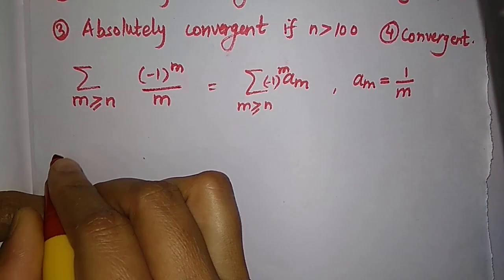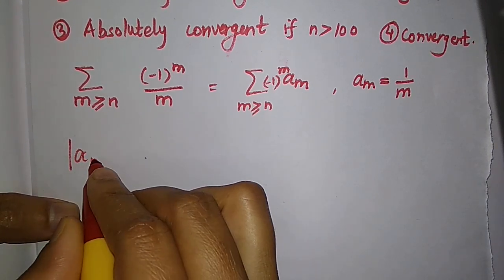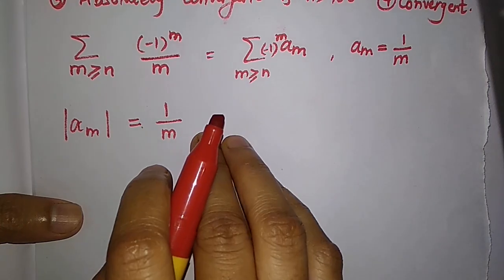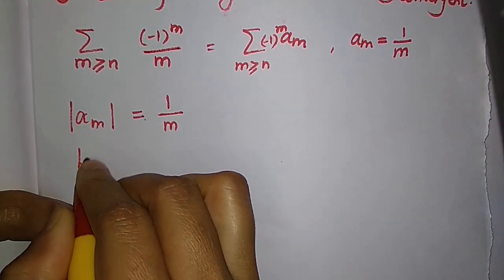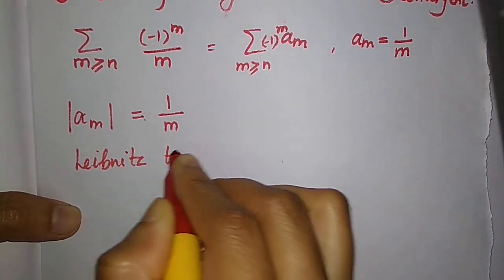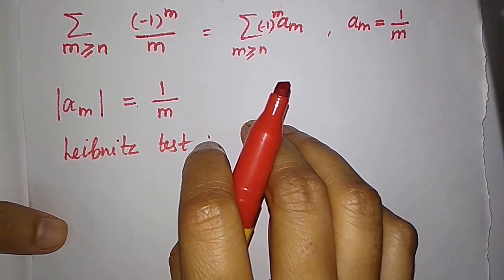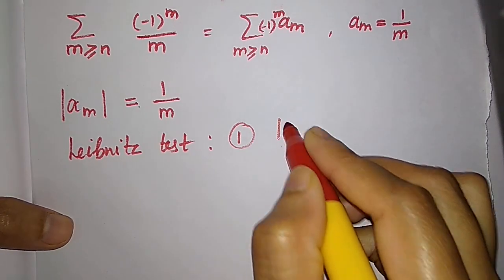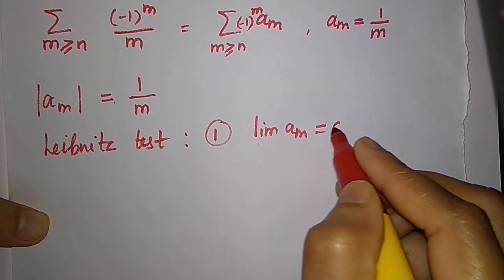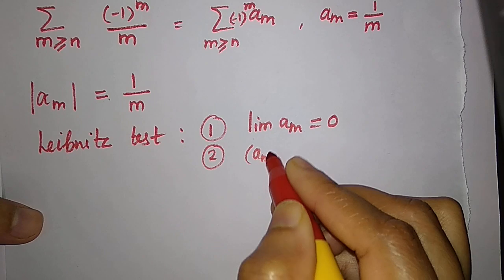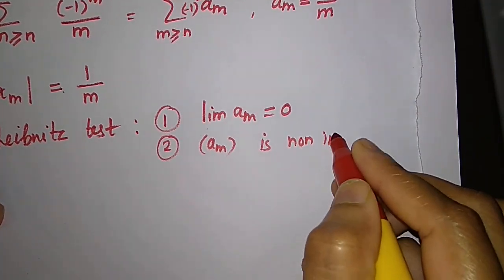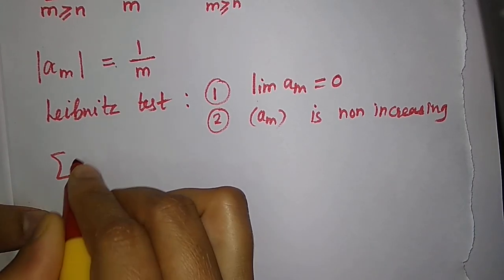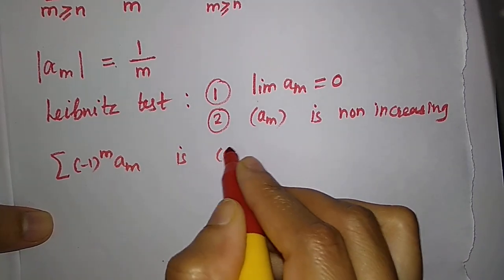Here, |a_m| = 1/m. To check the convergence of an alternating series, we use the Leibniz test. The conditions are: first, the limit of a_m must equal 0; and second, the sequence a_m must be non-increasing. If both conditions are satisfied, then the series sum of (-1)^m · a_m is convergent.